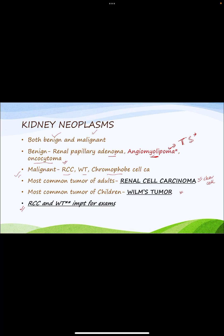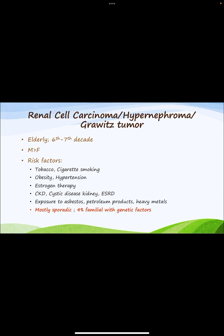Another benign tumor is oncocytoma. Among the malignant tumors there are clear cell renal cell carcinoma, Wilms tumor, and chromophobe cell carcinoma. The most common is renal cell carcinoma, and within that, clear cell RCC is the most common. In children, the most common kidney tumor is Wilms tumor. For exams, RCC and Wilms tumor are important. RCC is also known as hypernephroma, Grawitz tumor, or adenocarcinoma of the kidney.